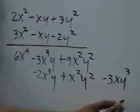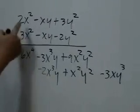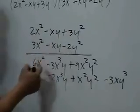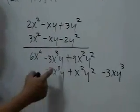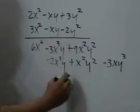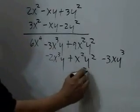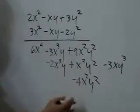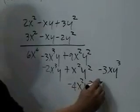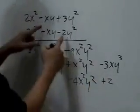Now, for our last line, we multiply each term of this factor by negative 2y² and get negative 4x²y², positive 2xy³,